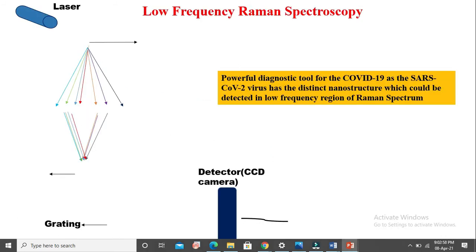Another contribution of material science is low frequency Raman spectroscopy. Raman spectroscopy is used to detect the chemical vibrations and chemical bonds present in a material.